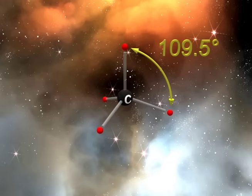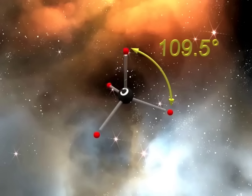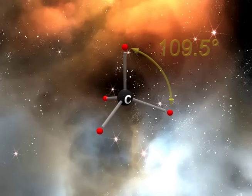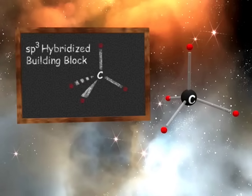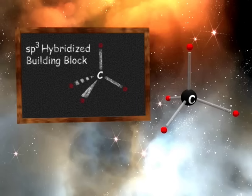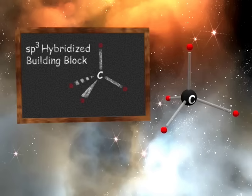Think of this as the orbitals attempting to minimize repulsions between them. Thus, they are oriented towards the corners of a tetrahedron with all angles at 109.5 degrees. Your instructor will often draw the sp³ hybridized carbon on the blackboard as shown. The two solid lines in this drawing are in the plane of the board, the wedge represents the electron coming out of the plane of the board, and the dashed line represents the electron going back behind the plane of the board.